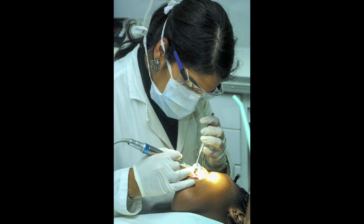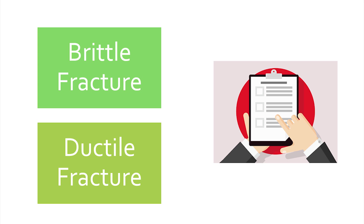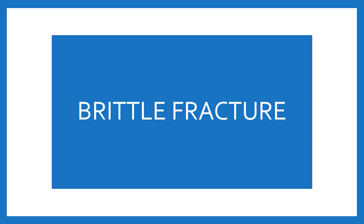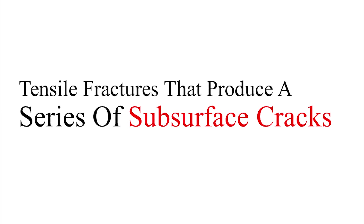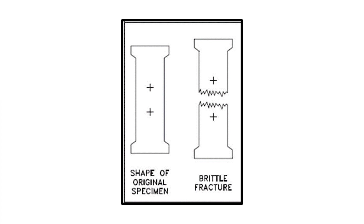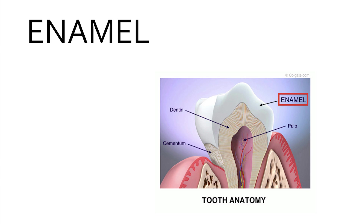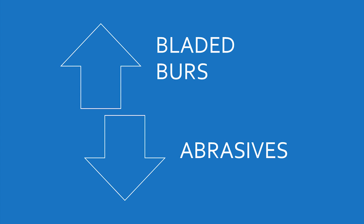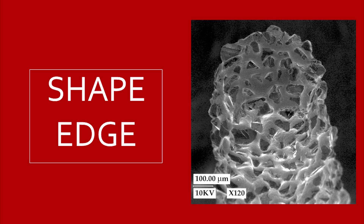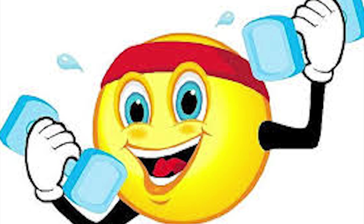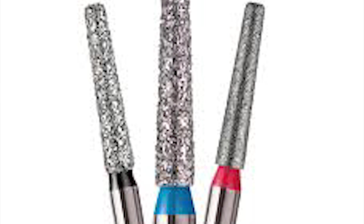When you touch a tooth structure with a high speed cutting tool, it cuts by two mechanisms: brittle fracture and ductile fracture. Brittle fracture means a sudden, very rapid cracking of the tooth structure caused by tensile force, which forms subsurface cracks that undermine the structure, causing a portion to come out very fast. This type of cutting happens most commonly in enamel, and is better achieved with diamond abrasives than bladed burrs because diamond abrasives have a sharp edge and a large negative rake angle.